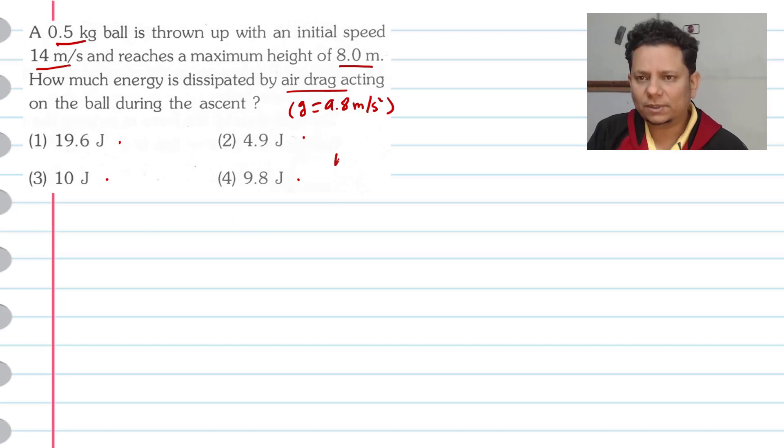In work energy theorem we write: work done by external force - using modified work energy theorem - plus work done by non-conservative force plus work done by pseudo force is equal to delta KE plus delta PE.